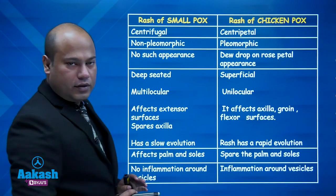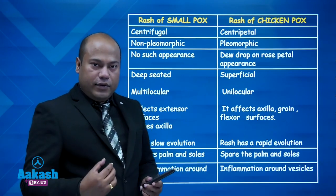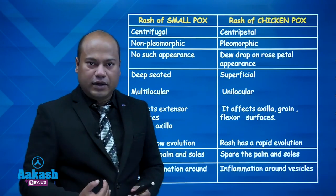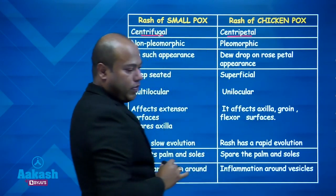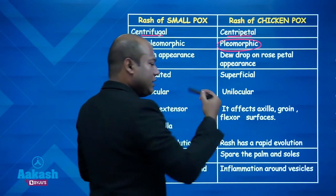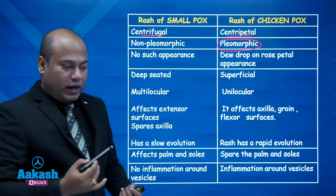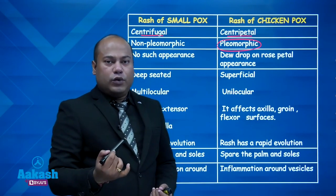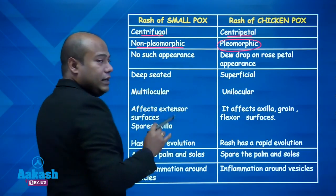In chickenpox, the rash moves towards the center — centripetal — whereas in smallpox the rash moves outwards away from the center — centrifugal. Chickenpox has a pleomorphic rash, meaning you can see all stages of the rash at once: macule, papule, vesicle, and scab at the same time. In smallpox it is non-pleomorphic — you cannot see all stages simultaneously.